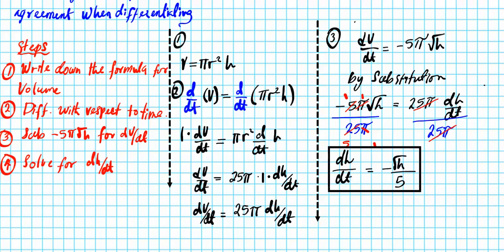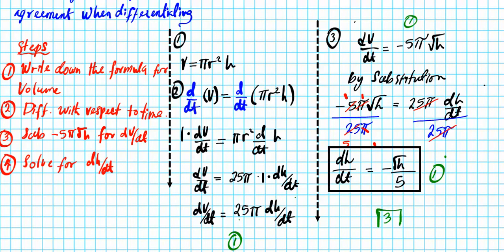So how are you graded on this question? First, you get one point for stating that dv/dt is equal to negative 5π√h. Then you get another point by differentiating the equation and carrying out all your substitution to end up with the result. That's the computation of dv/dt. And the last point involves combining these two together and solving for dh/dt. You get one point for getting the final answer, for a total of three points in this question.